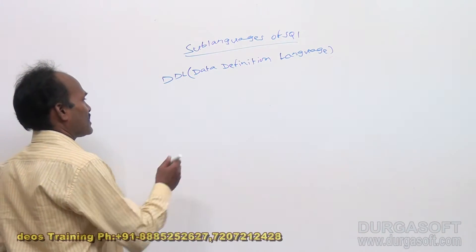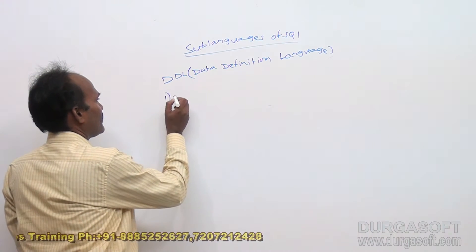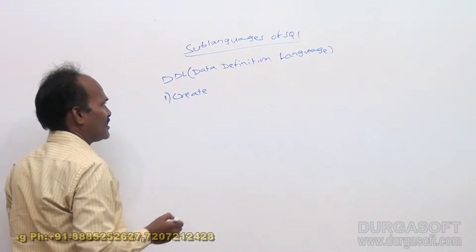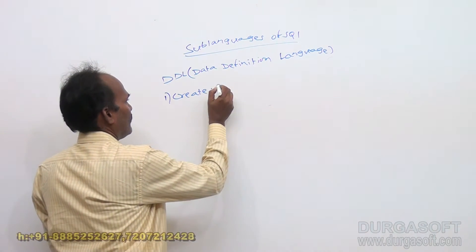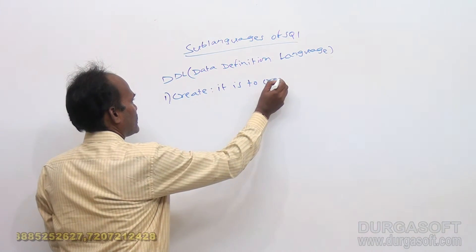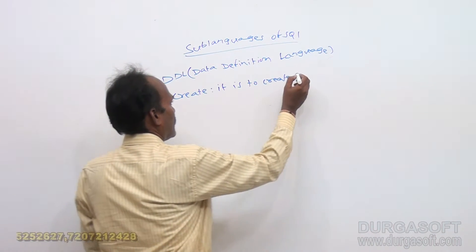Data definition language commands we have three. First one is create command. This is for creating objects, to create database objects.